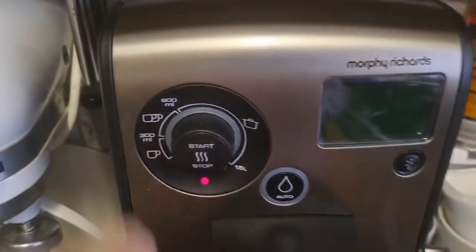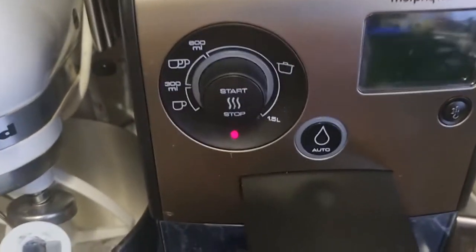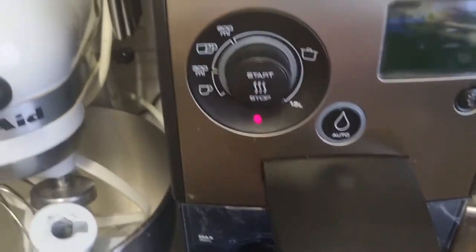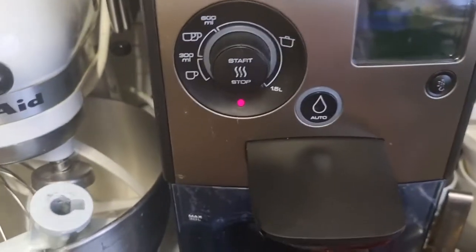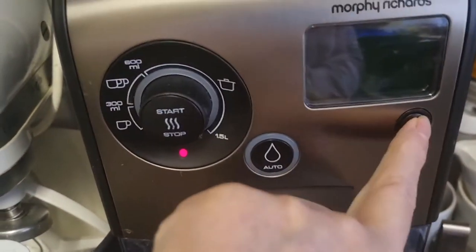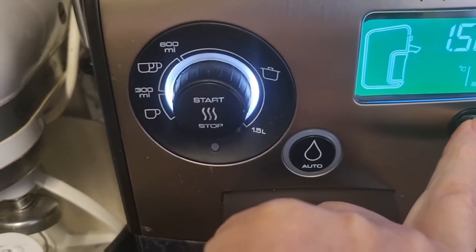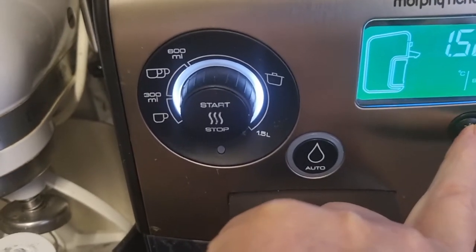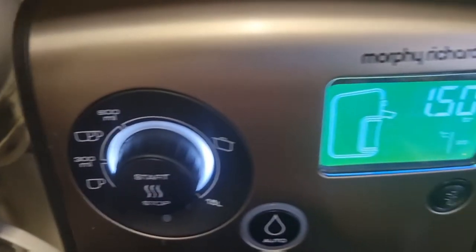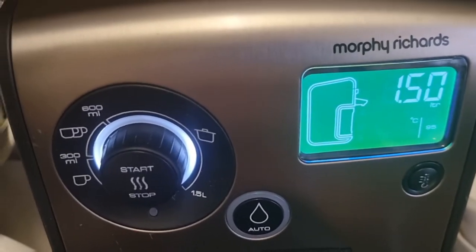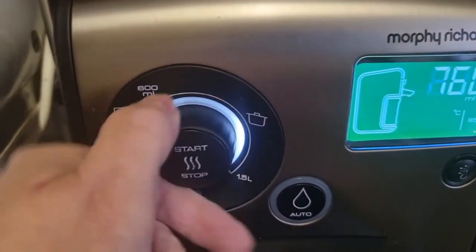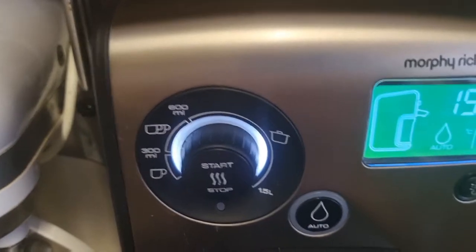Then we come on to our Redefine hot water boiler I suppose for want of a better word. We can alter the temperature, it goes from 85 degrees Celsius up to 100 and it has 95 degrees.